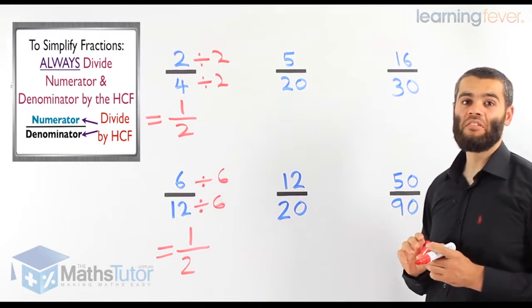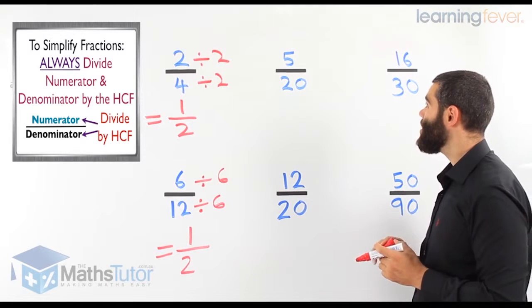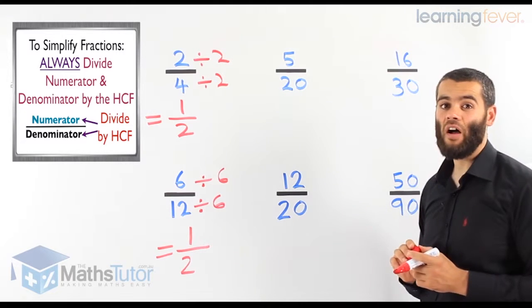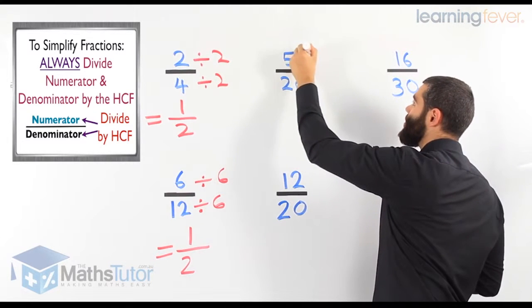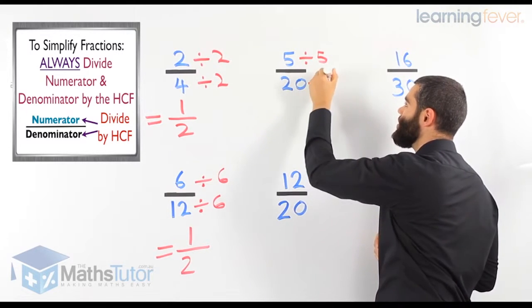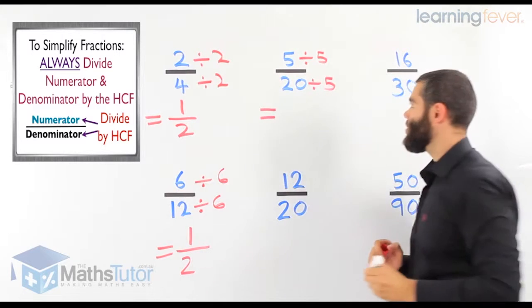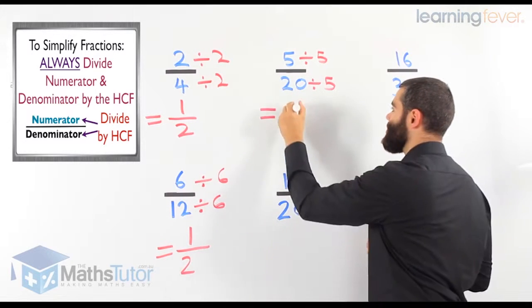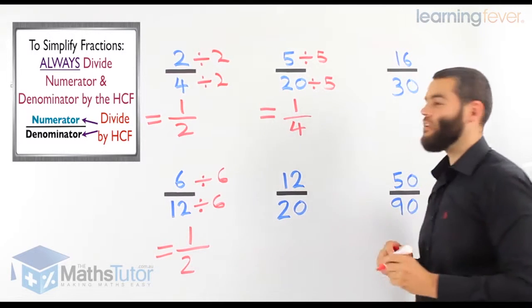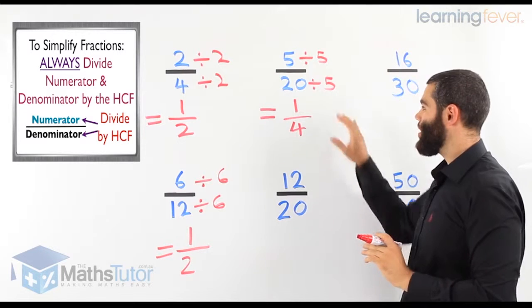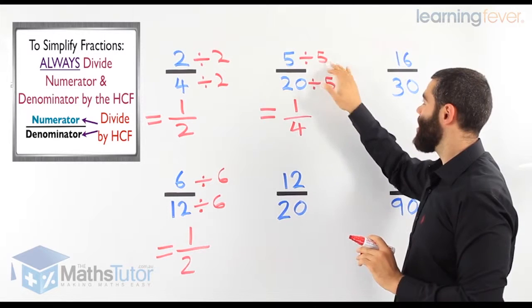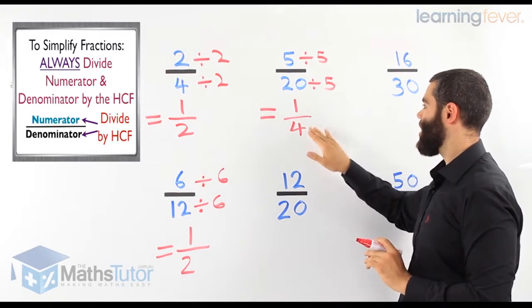5 over 20, we want to simplify that. Well, 5 over 20, what are the highest common factor here? The highest common factor is going to be 5. 5 is the HCF. 5 divided by 5 is 1. 20 divided by 5 is a quarter. So 5 over 20, simplified all the way, becomes 1 quarter. HCF is the 5. 5 divided by 5 is 1. 20 divided by 5 is 4.